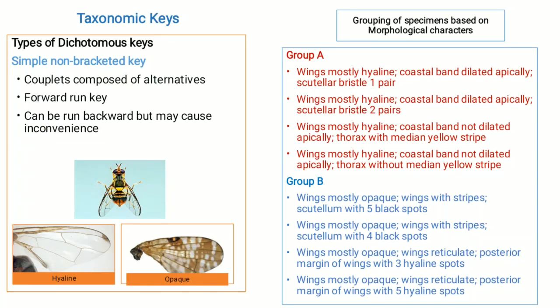Group A consists of wings that are mostly hyaline, whereas Group B consists of wings that are mostly opaque. We arrange these characteristics in the form of couplets or pairs based on wing morphology. This is a forward-run key because with successive pairs we are moving from one characteristic to the other, allowing us to identify the specimens.